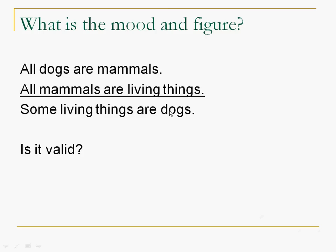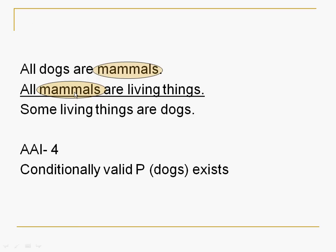So we figure out the mood and figure, right? All are A. All are A. Some are I. A, A, I. The figure is determined by the position of mammals, predicate, then subject, so it's A, A, I, figure four.